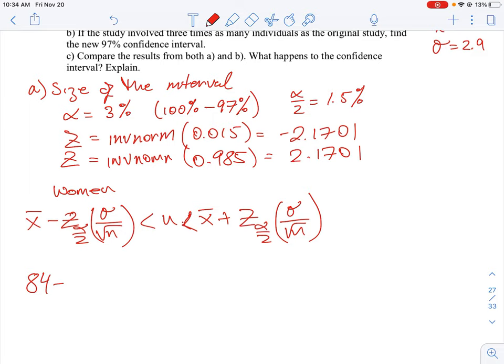So we're just going to use 2.1701 times standard deviation is 3.1 and the sample size here was 200. Okay, and then we do the same for the other side. We're just going to, instead of subtract, we're going to add the value and it's the same calculation.